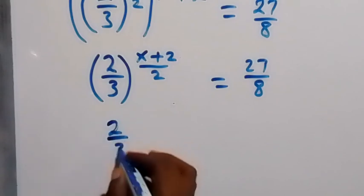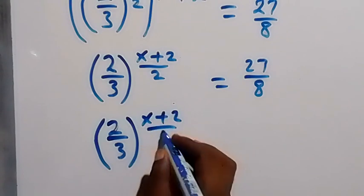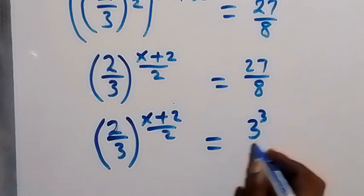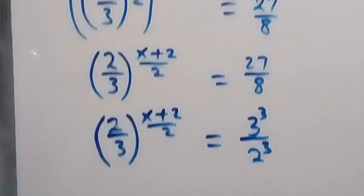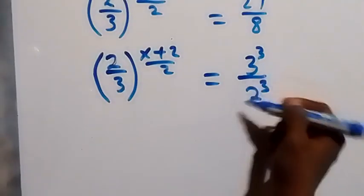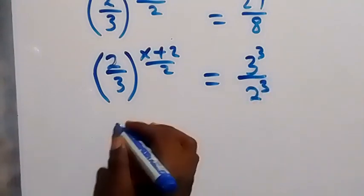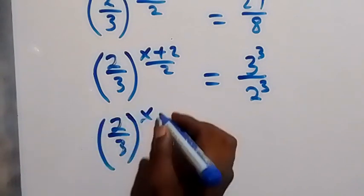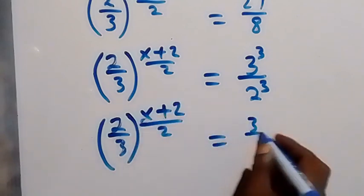In the next step, let's rewrite the right-hand side. We have 2 over 3 raised to power (x plus 2) over 2 equals 27 over 8. Now, 27 can be written as 3 raised to power 3, and 8 as 2 raised to power 3. By the law of indices, we factor out the common power of 3, giving us 3 over 2 in a bracket raised to power 3. So we have 2 over 3 raised to power (x plus 2) over 2 equals 3 over 2 raised to power 3.